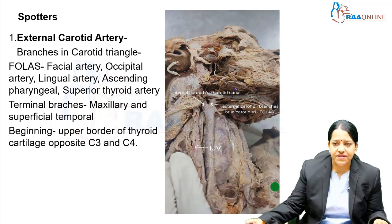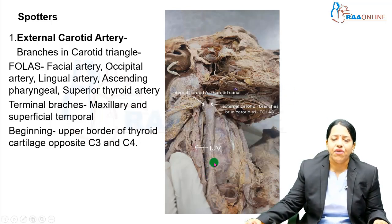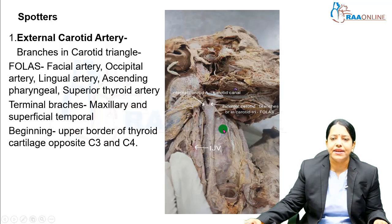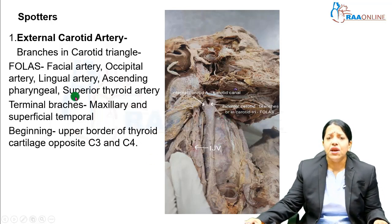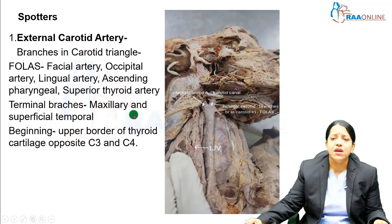Let us go to the first slide. This is a dissected cadaver of head and neck, and here we have shown the neck region. The neck region is highlighted more, and there are three spotters or three identifiers which have been labeled.